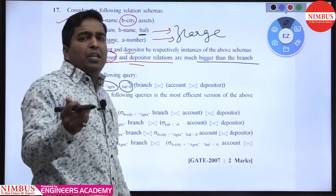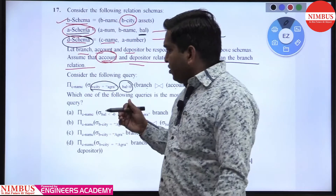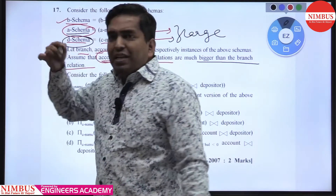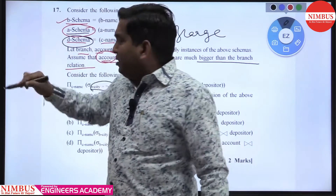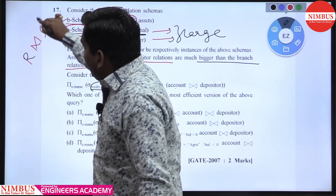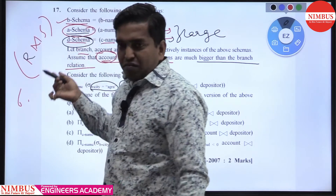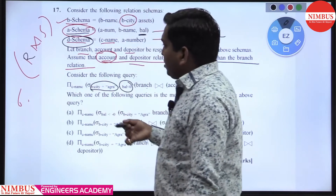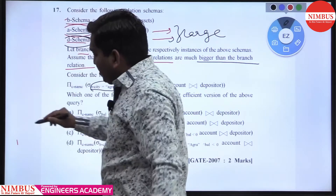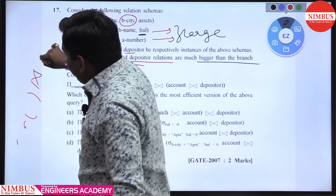Which of the following queries is the most efficient version of the above query? The meaning of most efficient query is: if you find any condition, then you should first apply the condition and then do the join — not join first and apply condition after, which is wrong.